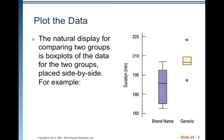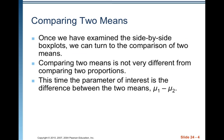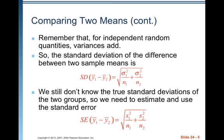For example, here we have some duration times for batteries. We've got brand name and generic. Once we've examined the side by side box plots, we can turn to the comparison of two means. Comparing two means is not very different from comparing two proportions. The parameter of interest is the difference between the two means, mu1 minus mu2.